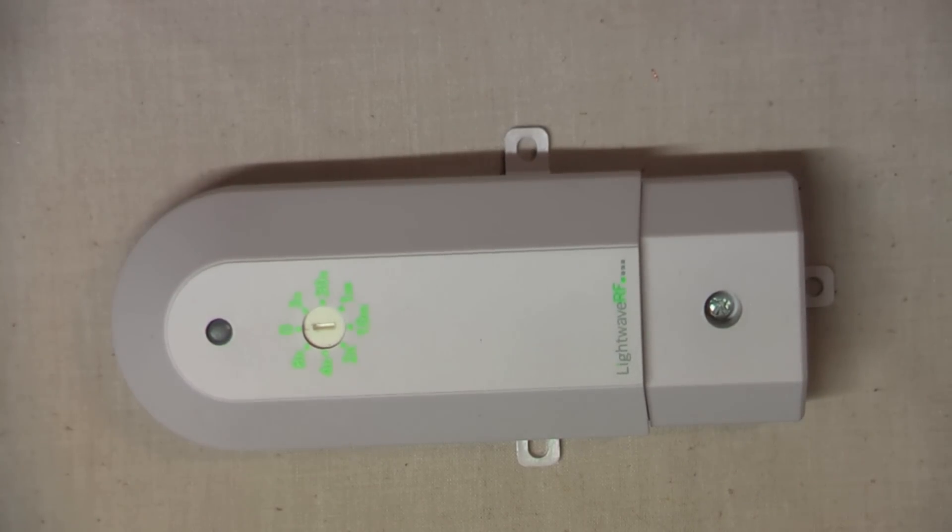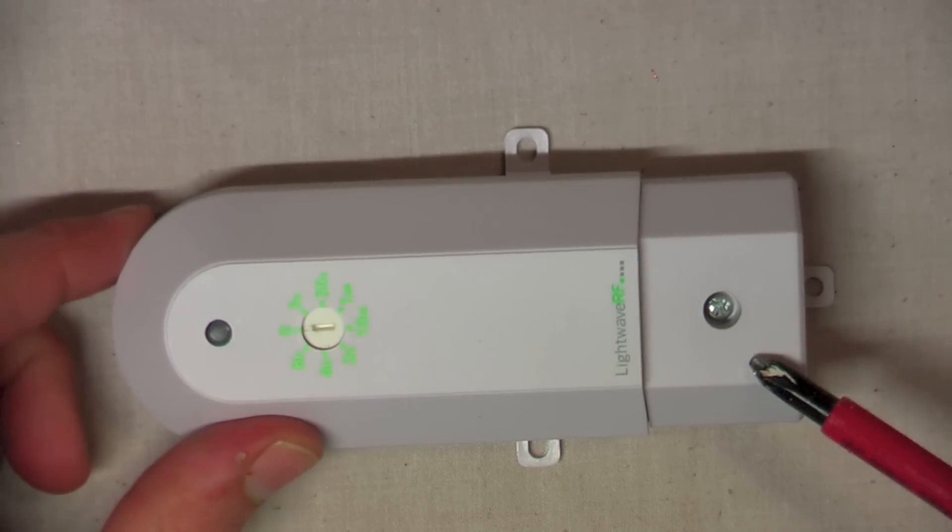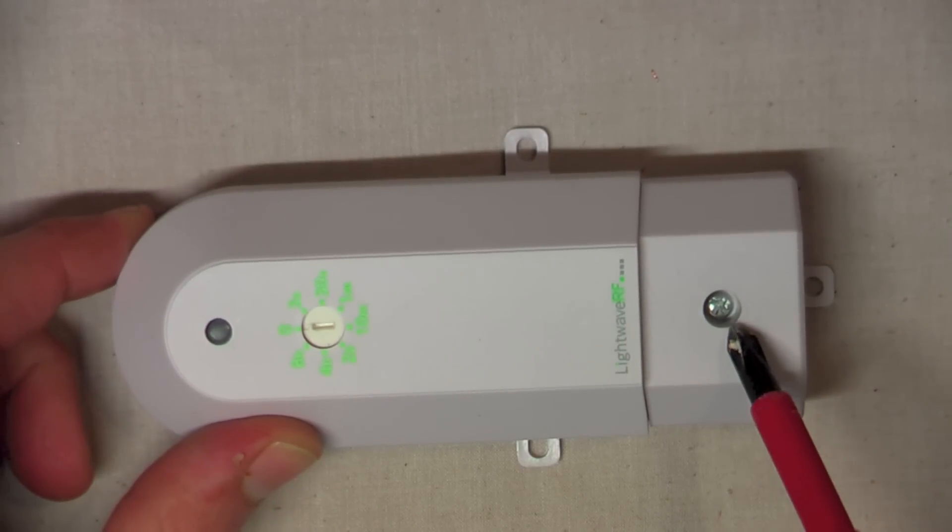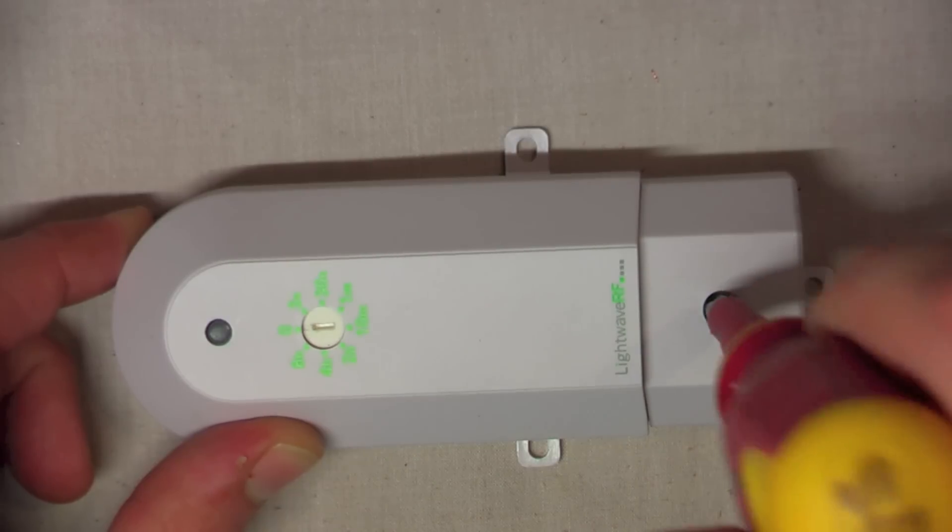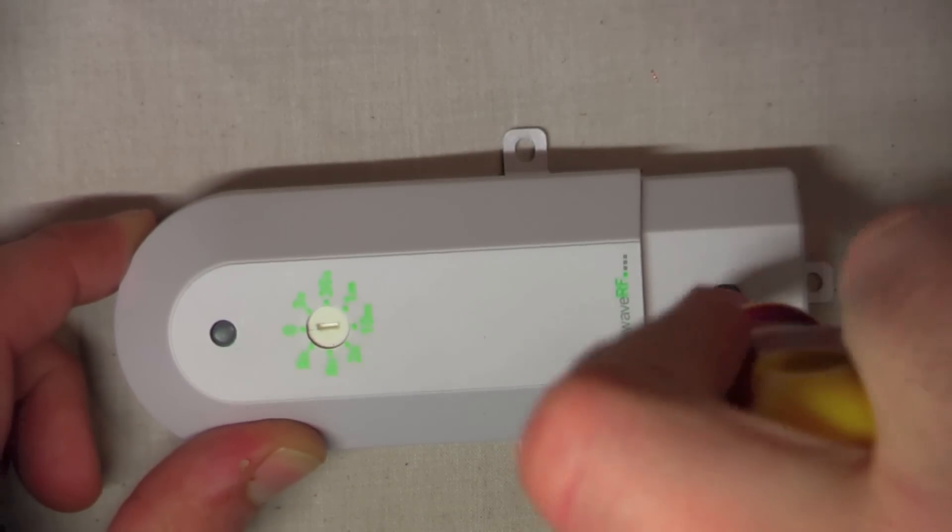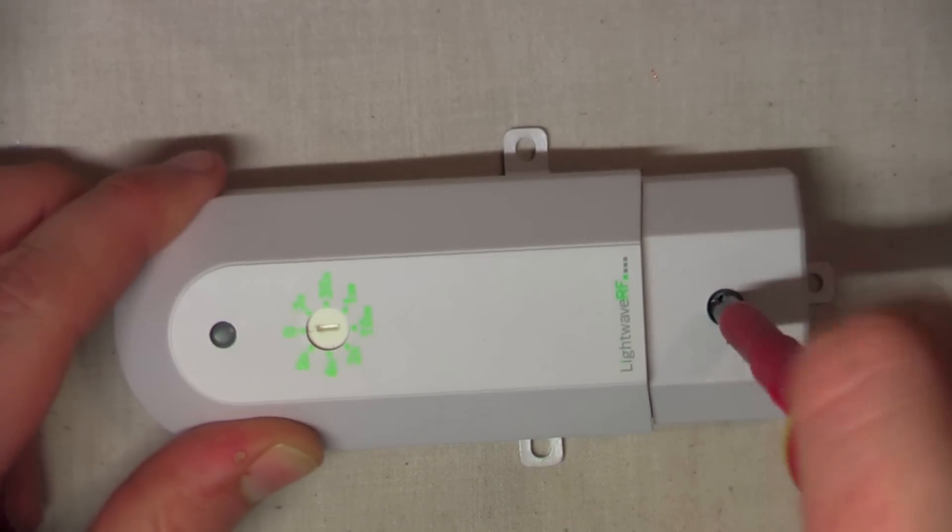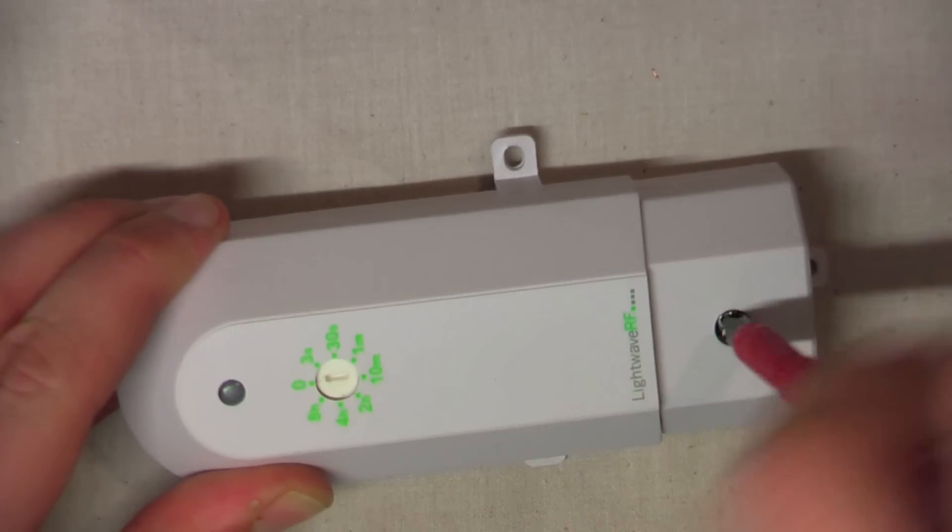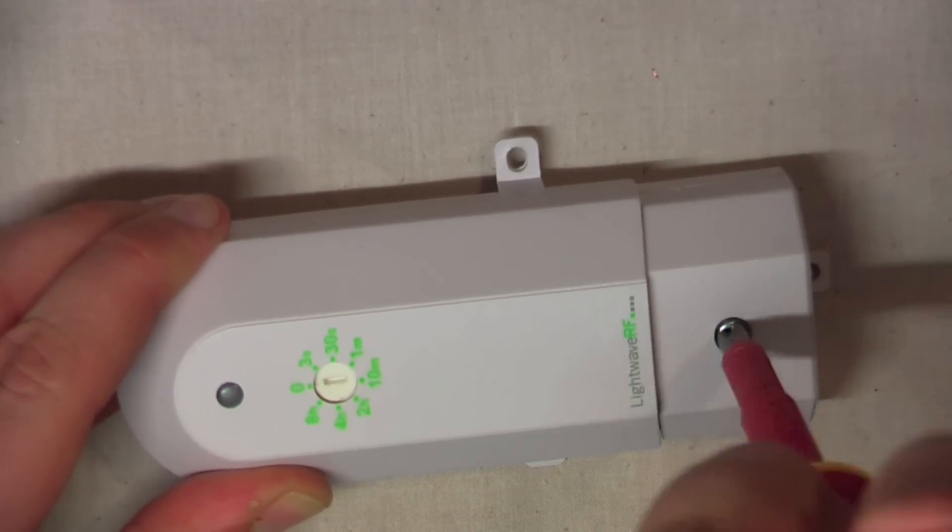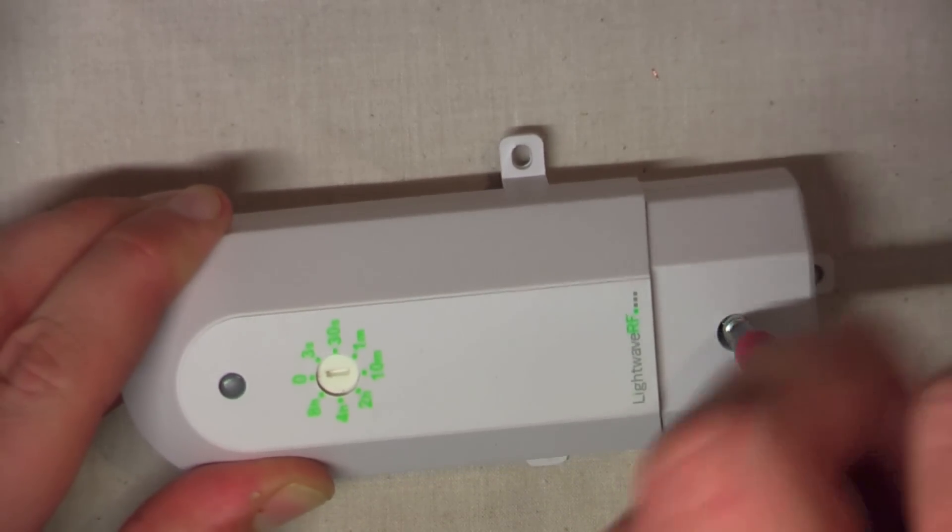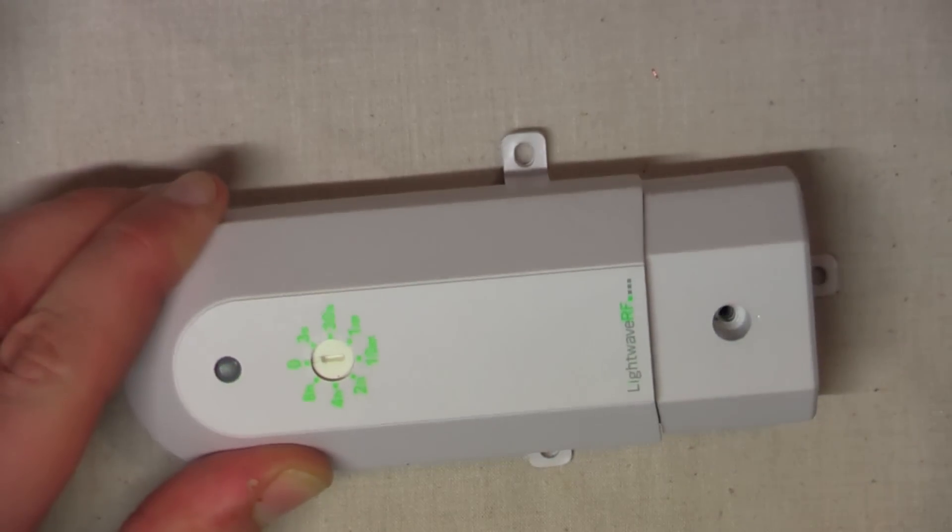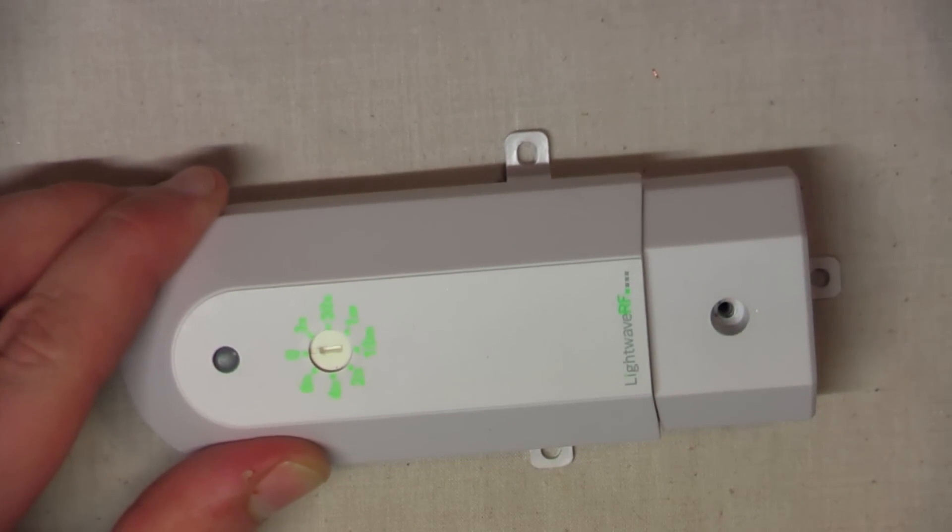So how do we wire it up? Well, the first thing we do, we need to release this cover here, and this is via a standard Phillips screw. This is a number 2 Phillips screwdriver, we'll loosen that there. There we go, take the screw out, pop that to one side.